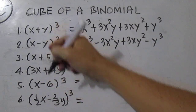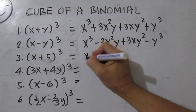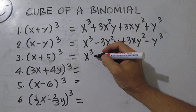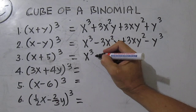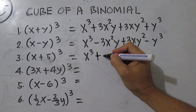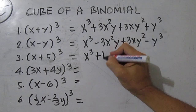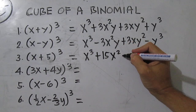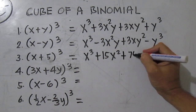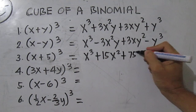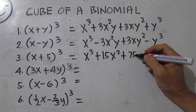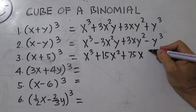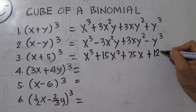For number 3, just like number 1, we have x cubed plus 15x squared plus 75x plus 125.